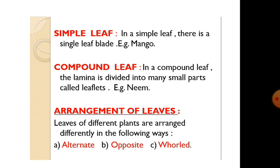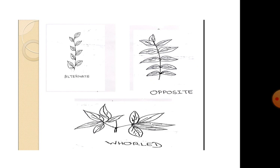Arrangement of leaves. Leaves of different plants are arranged in different ways: alternate, opposite, and whorled. In alternate arrangement, only one leaf arises from each node and two successive leaves are in opposite directions, like in the case of china rose. In opposite arrangement, two leaves arise from the same node but opposite to each other — for example, guava. In whorled arrangement, more than two leaves arise from the same node and they are arranged in a circle.